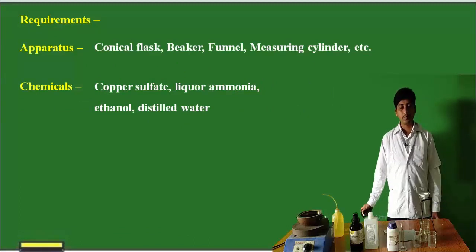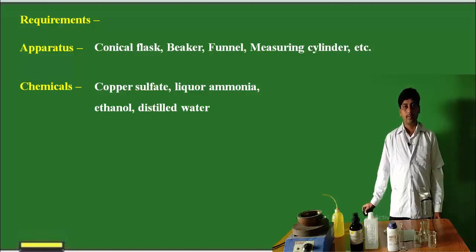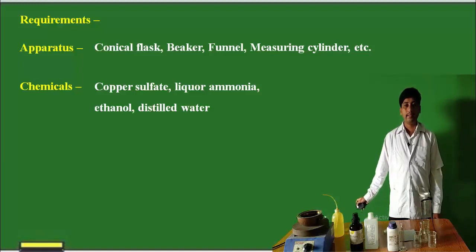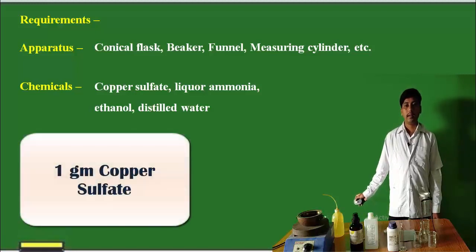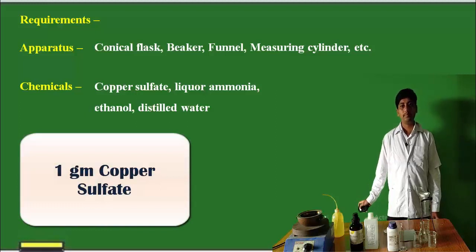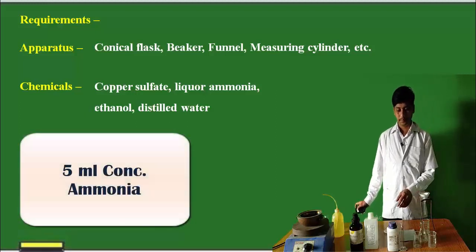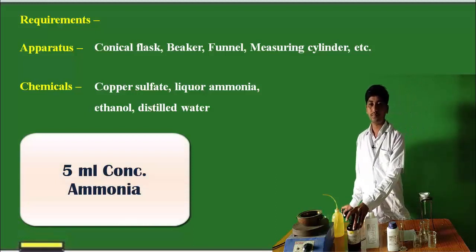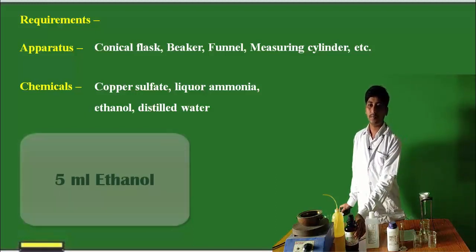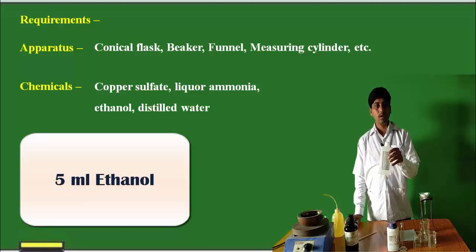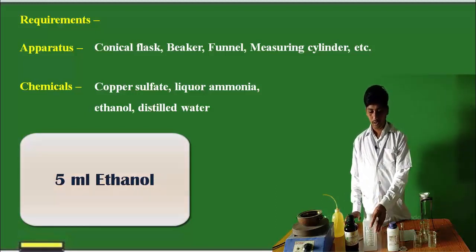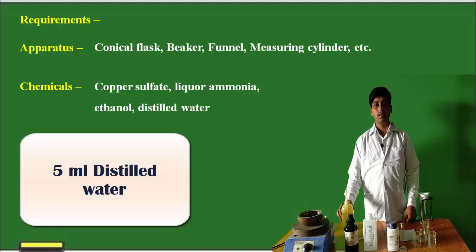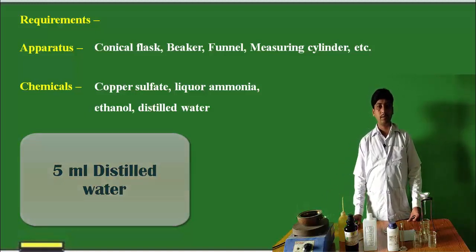Now friends, we will see the requirements. For this practical, we require apparatus like a conical flask, beaker, funnel, measuring cylinder, stirrer, etc. The chemicals required for this practical are: copper sulphate, 1 gram; liquor ammonia, 5 ml; ethanol, 5 ml; and distilled water, 5 ml. These are the requirements for this practical.